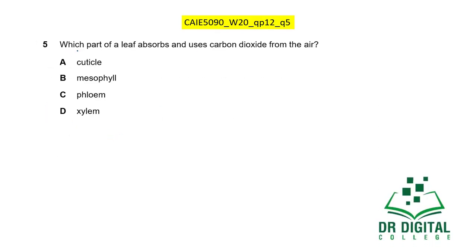In this question, which part of the leaf absorbs and uses carbon dioxide from the air? Carbon dioxide is used by photosynthetic cells, which are the mesophyll cells. The cuticle is not cellular. Xylem and phloem are dead cells. So only mesophyll cells can absorb and use carbon dioxide in the leaf.